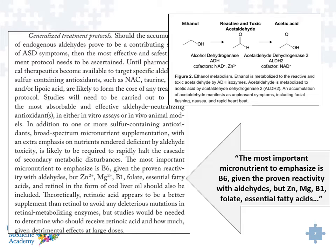Arabinose — our body will use certain nutrients to try to improve its stability or prevent its binding to other chemicals: B6, biotin, lipoic acid, for example. Because of the presence of aldehydes, we can start to run a deficit in things like B6, which is very important in the methylation cycle and in neurotransmitter production of dopamine. We can also run into zinc deficiencies, magnesium deficiencies, B1, folate, and essential fatty acids.